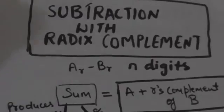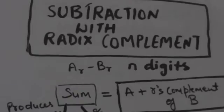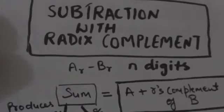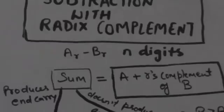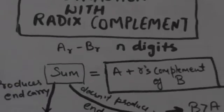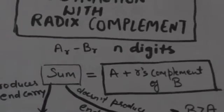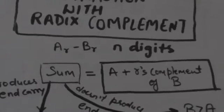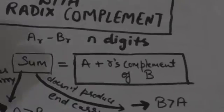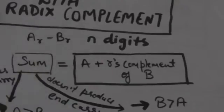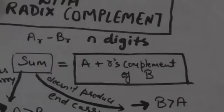Suppose there are two numbers A and B of N digits and their base is R. Suppose we have to subtract number B from number A. We will first find the R's complement of number B, then we will add A to the R's complement of B.